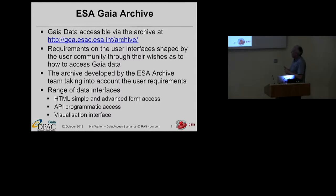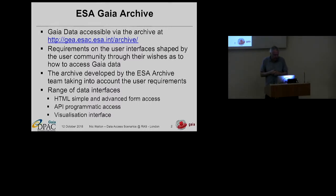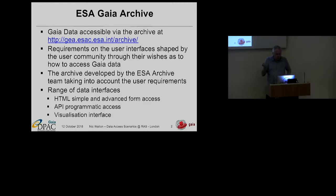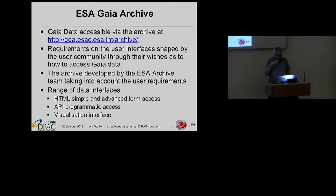The requirements were shaped by the community in the first instance, modulated by what the archive team can develop. They took account of the user requirements and tried to respond to all of them. This has resulted in a range of interfaces: the HTML page, simple and advanced queries, API programmatic interfaces — so if you're a Python aficionado you can access data through AstroPy — and a number of visualization capabilities connected to the archive, with nice features between the visualizer and the query data.